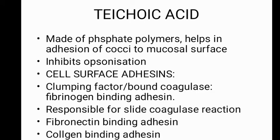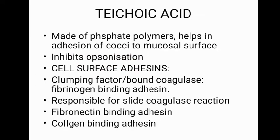The next cell wall-associated factor is teichoic acid, which is made up of ribitol phosphate polymers. It helps in adhesion of cocci to mucosal surfaces. Its main function is inhibiting opsonization. Opsonization is the process by which opsonins — proteins produced in response to microbes — attach to the surface of a cell wall, attracting phagocytes to engulf the microorganism. Teichoic acid inhibits this process, preventing phagocytosis and enabling infection.